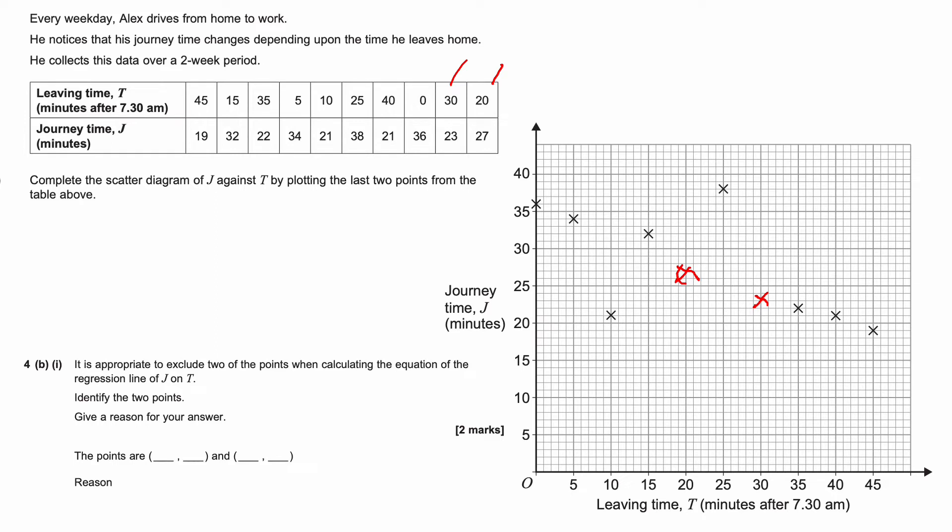Then it says it is appropriate to exclude two of the points when calculating the equation of the regression line of J on T and identify the two points. So what we're looking for here is outliers, things that don't follow the general pattern of the regression line. And we can see that we've got quite a nice line here, were it not for this point here and this point here. So the points that we're going to exclude are 10, 21, which is this one corresponding to this one here. And the other one is 25, 38. So they're outliers. They don't follow the general pattern of the rest of the data.